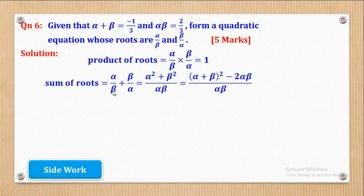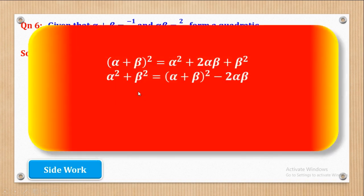Next is to get the sum of roots. The sum is α/β + β/α. Taking the LCM as αβ, I get (α² + β²) over αβ. Now α² + β² can be written as (α + β)² − 2αβ. This comes from the identity (α + β)² = α² + 2αβ + β², so rearranging gives α² + β² = (α + β)² − 2αβ. So the sum of roots equals [(α + β)² − 2αβ] divided by αβ.